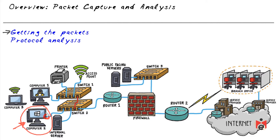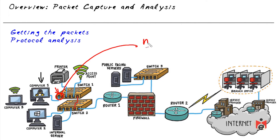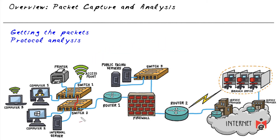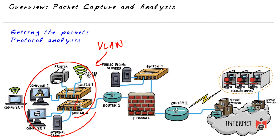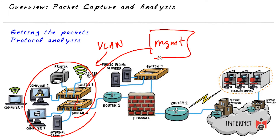But what if we want to capture traffic from a different computer? In most corporate networks, switches support mirroring — we can mirror or copy all traffic going into or out of a specific port and copy it to a management station running protocol analysis software. For capturing packets from multiple devices, if they're on the same VLAN, most corporate switches can mirror all traffic for that VLAN to a management computer.